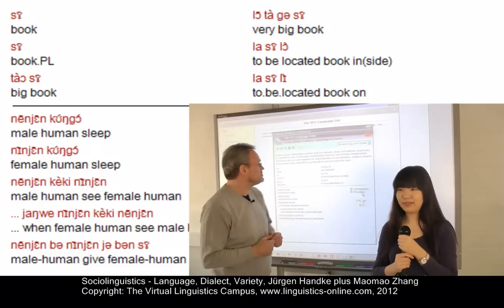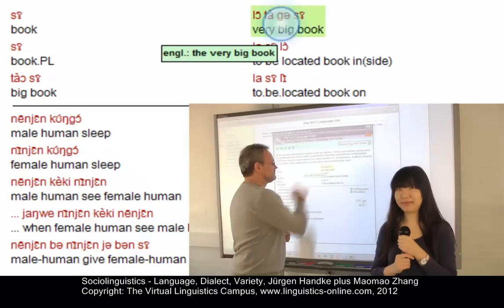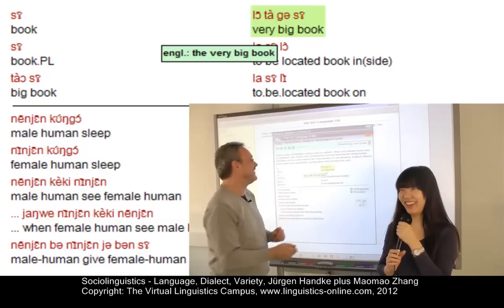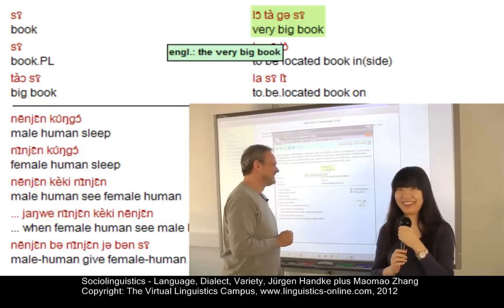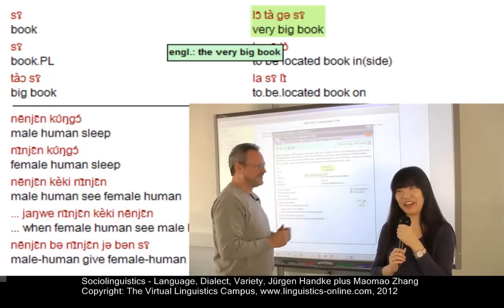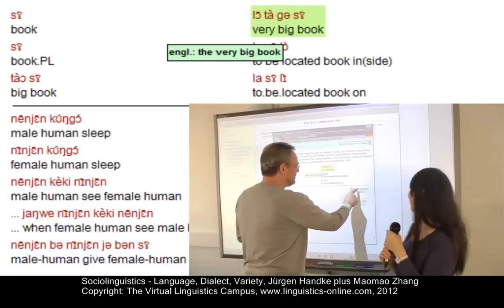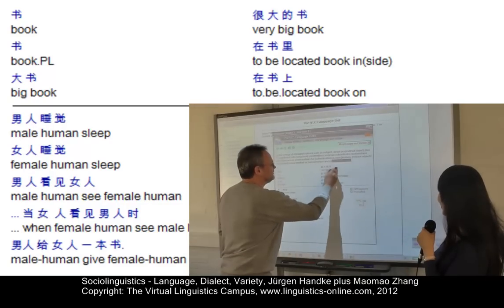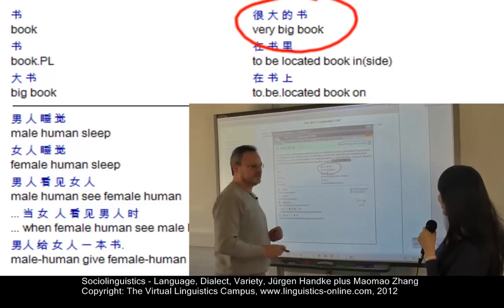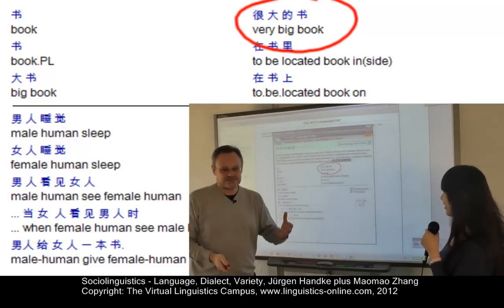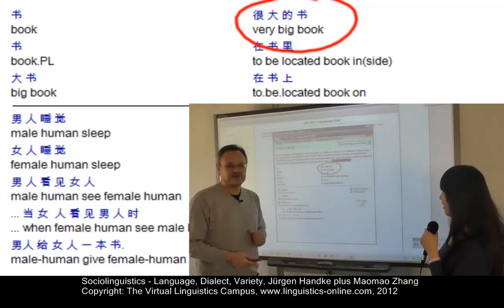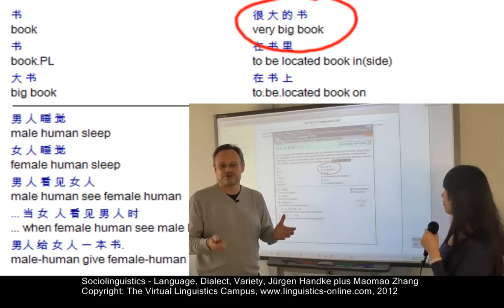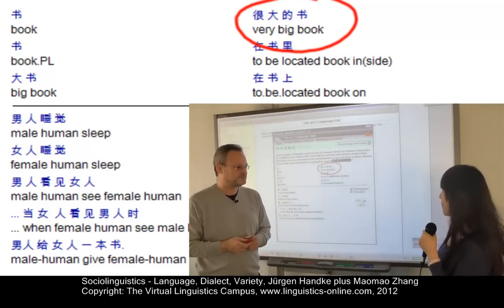Now we have a speaker from Suzhou. Please listen. [Speaker says: 'Lao Dao Ge Si.'] Can you understand that? Is that Chinese? [Mao Mao:] No, I don't think so. But now look — what we have here in writing. [Mao Mao:] Yes, 'Lao Dao Ge Si' — I can read it. So in all three cases, the same writing system unites Chinese and its varieties. The phonology was completely different, though.